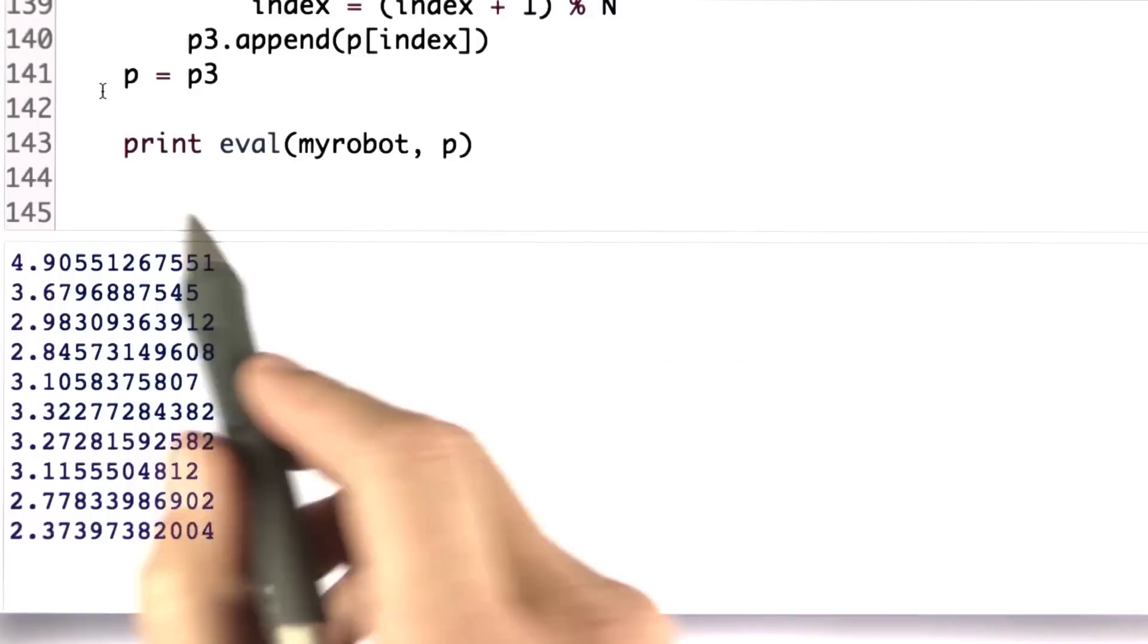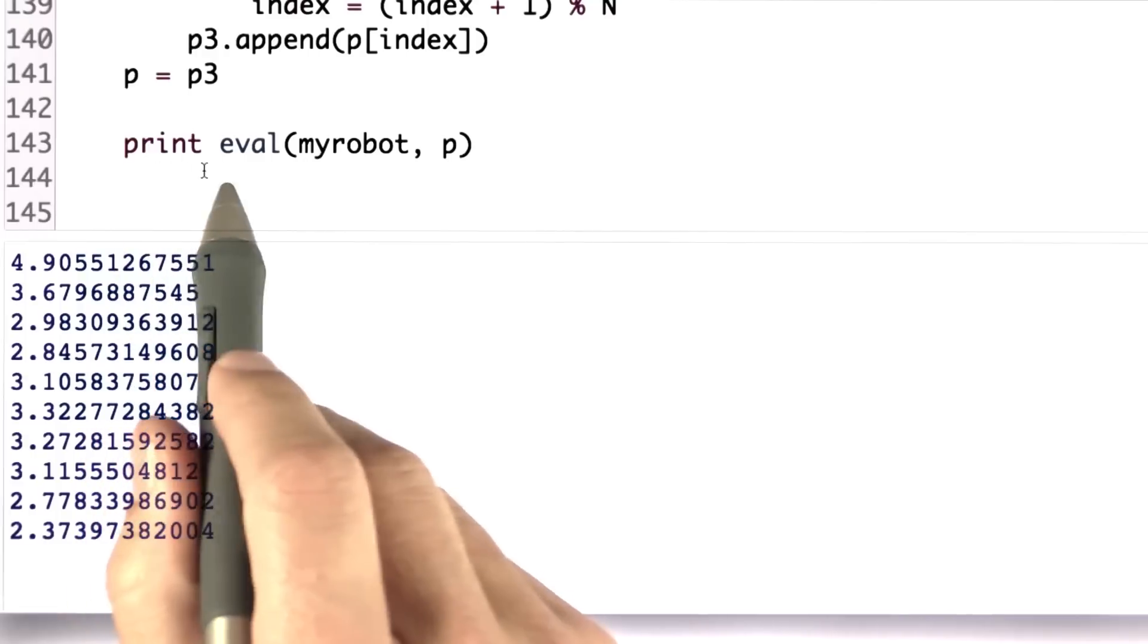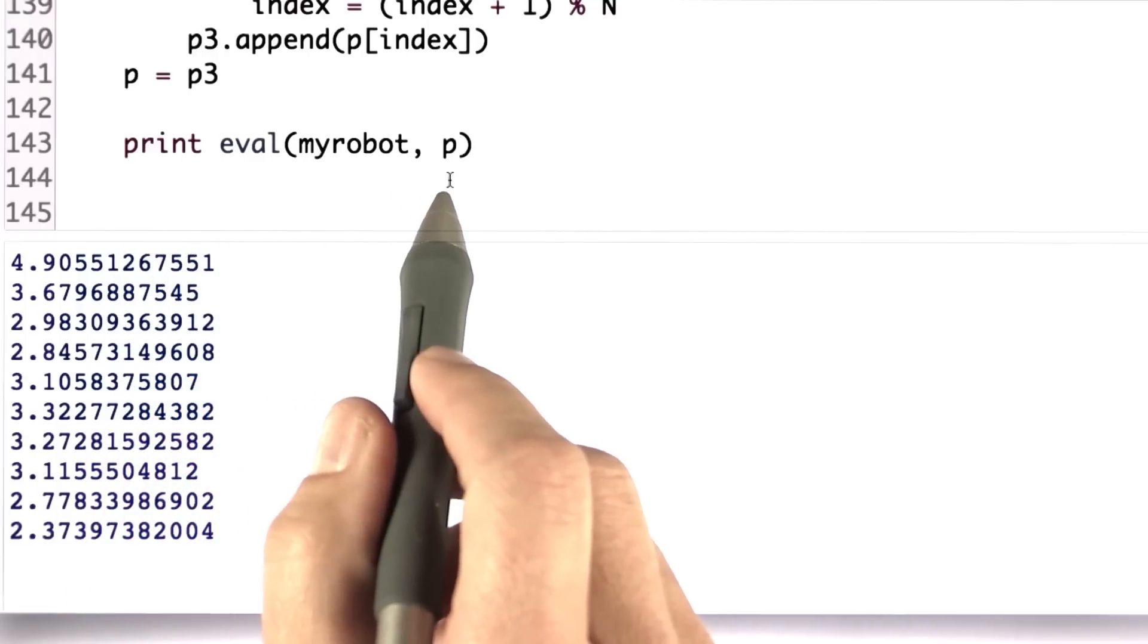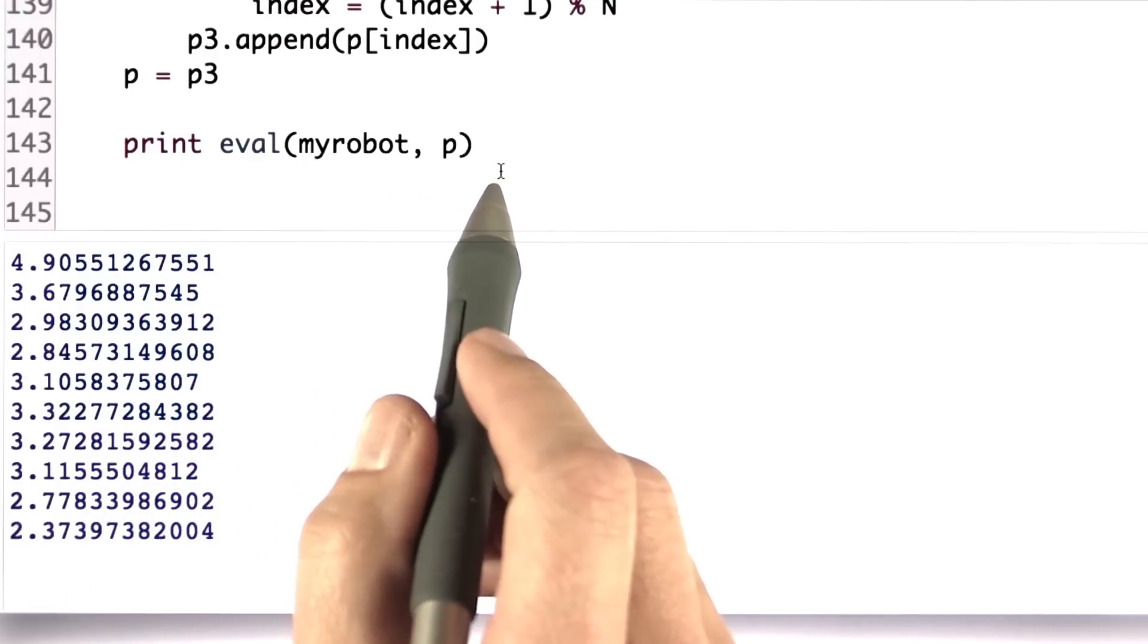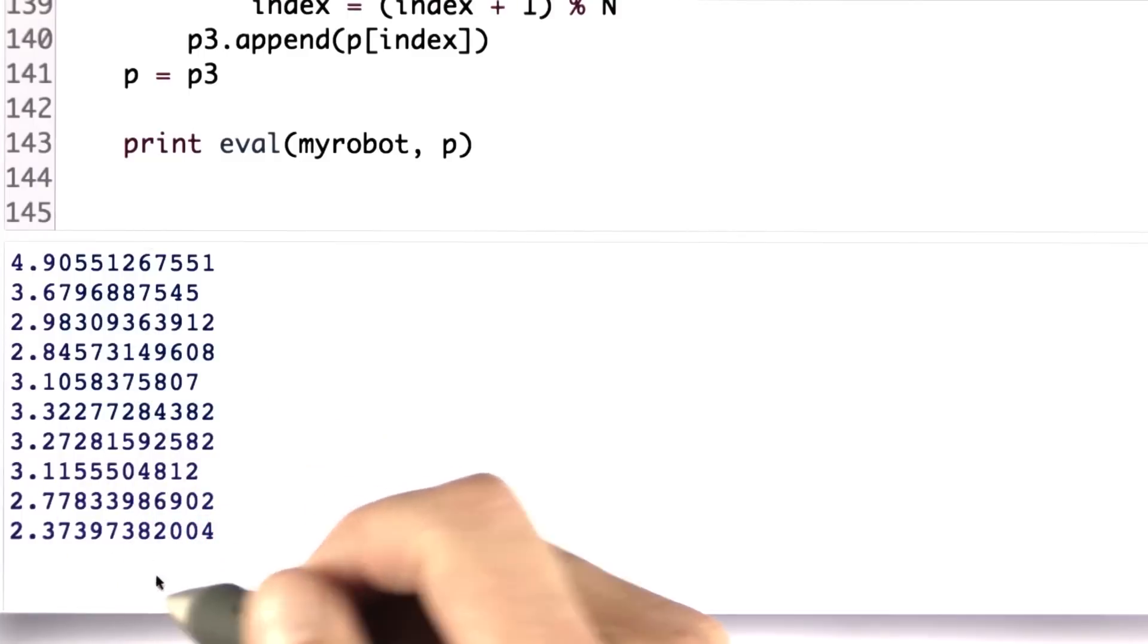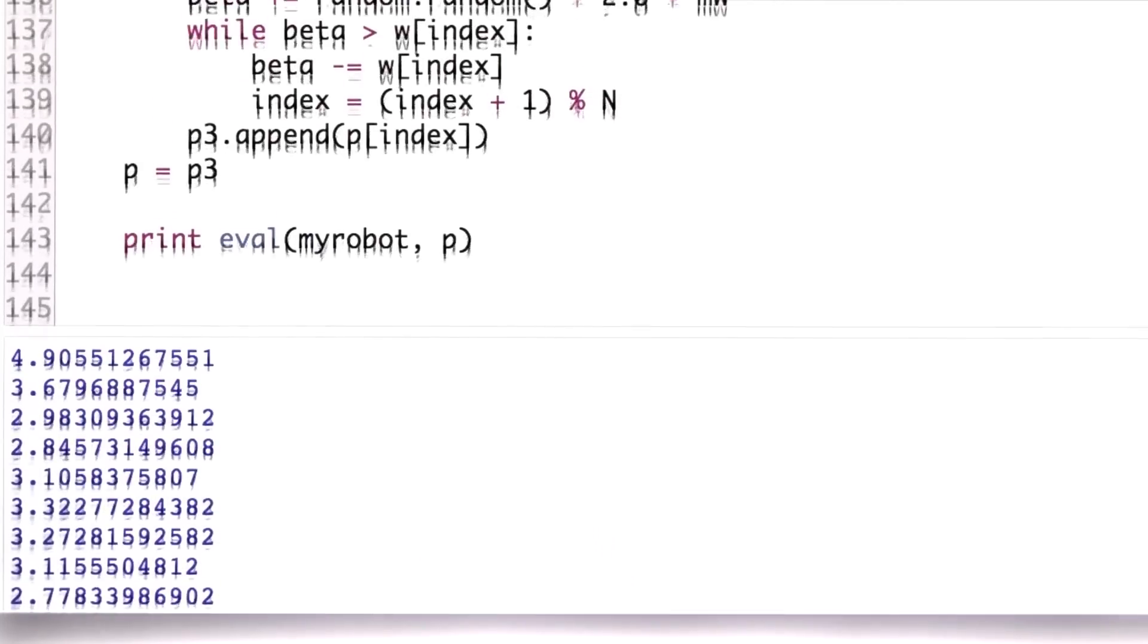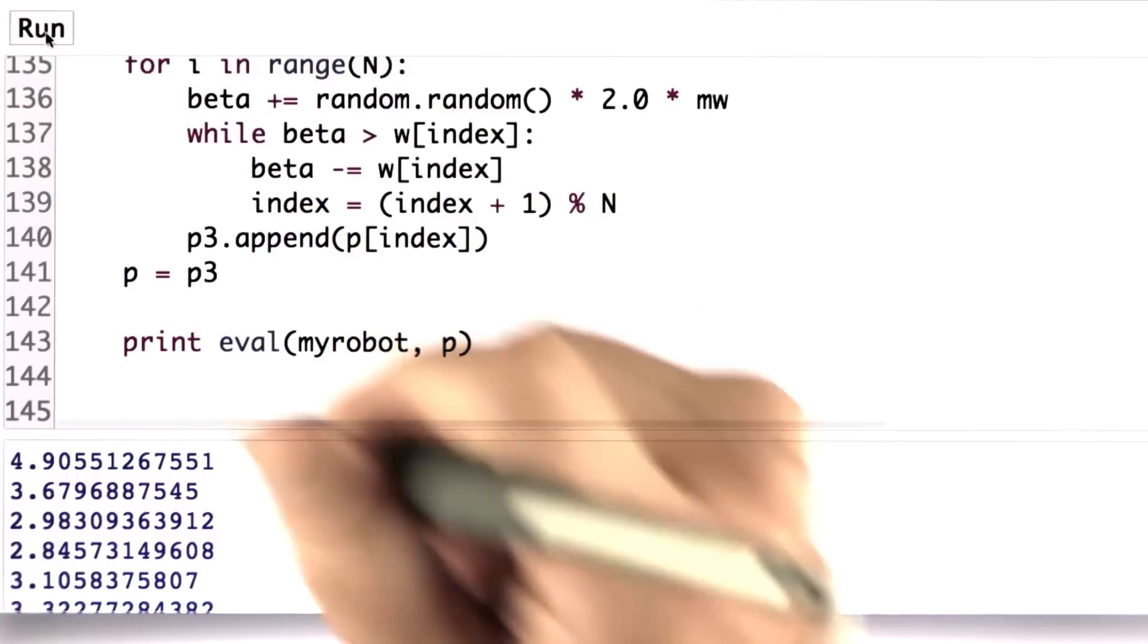So here's my solution. It's a simple command: print eval my robot p. I know it wasn't very hard, but it's kind of fun to play with. So here's a sequence of numbers I get out. It turns out we don't always get the same number. Sometimes it doesn't work.